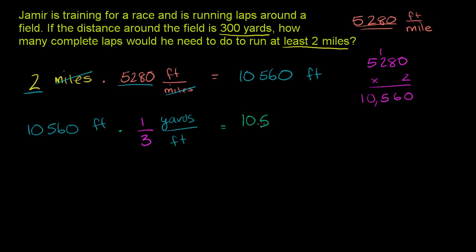So let's do this. So this becomes 10,560 times 1 divided by 3. So it's 10,560 over 3. And then the feet cancel out, and we're just left with yards. So 2 miles is 10,560 divided by 3. And let's figure out what that is.